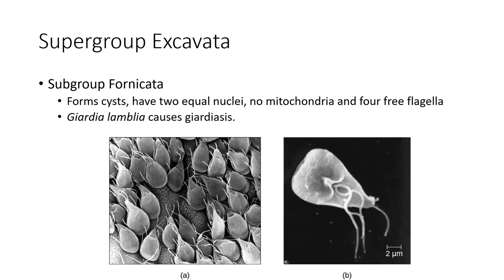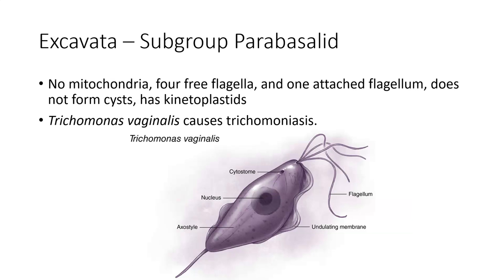Giardia lamblia causes giardiasis, more commonly called beaver fever. The parabasalid group also has no mitochondria and also has four flagella. In addition to that, they have an attached flagella flipping off the other side from the four free ones.